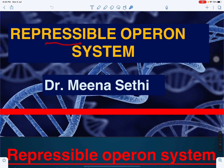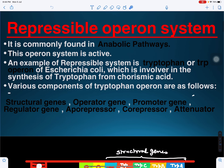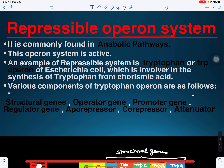In this video we will study about a repressible operon system. This is the second video on gene regulation. In the first video we discussed the inducible operon system. The repressible operon system is studied in E. coli during formation of tryptophan from chorismic acid. Tryptophan is an amino acid, which is why this is called the tryptophan or trp operon system. It is called repressible because the end product tryptophan, along with the repressor, can repress or switch off the gene. This system is usually studied during anabolic pathways, where synthesis occurs.